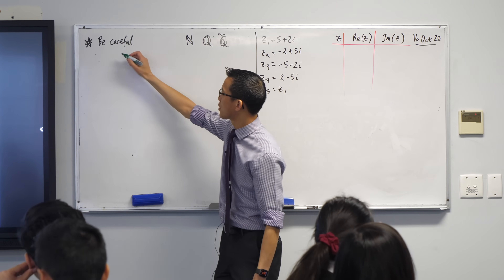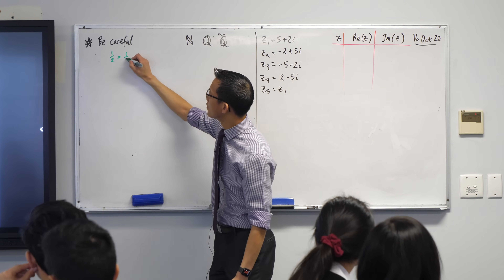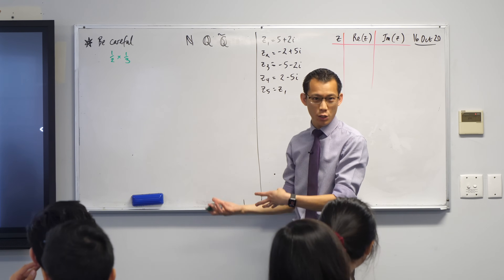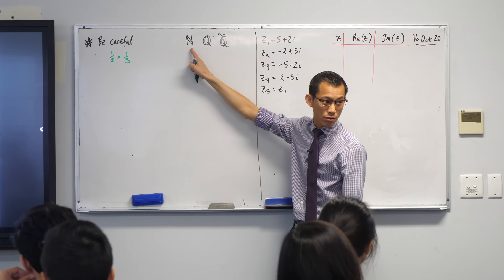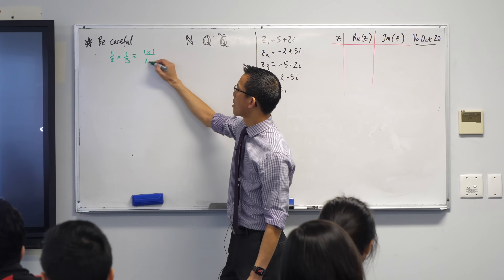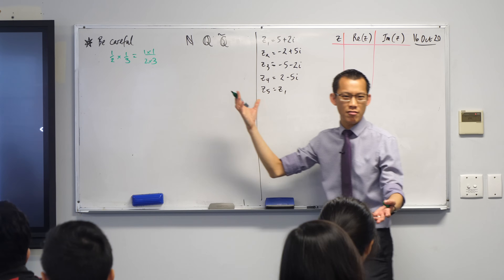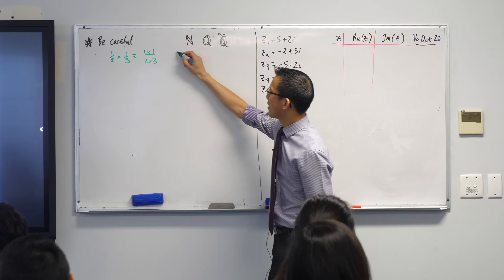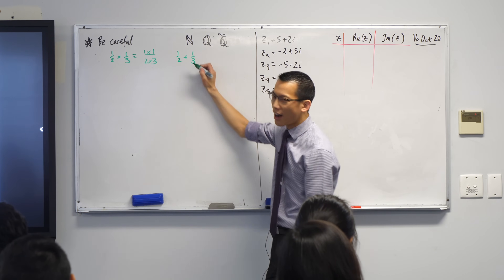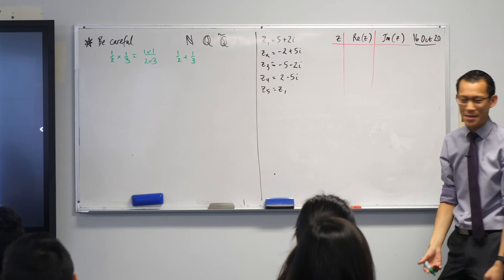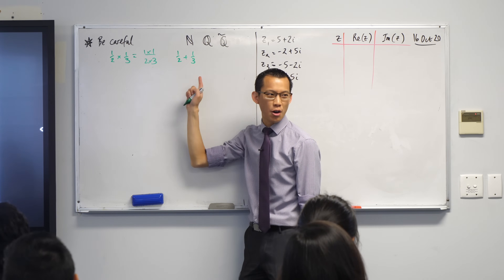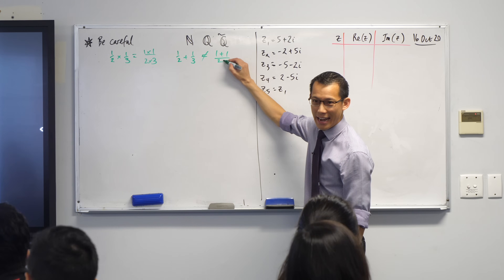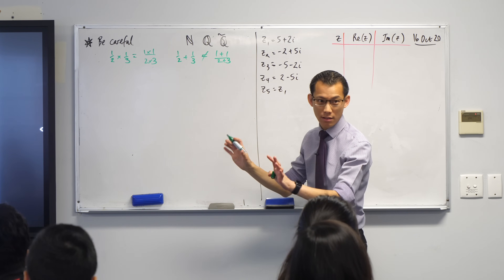We know that if you have something like a half times a third, this obeys the kinds of things you'd expect from multiplying whole numbers — you just multiply the tops and multiply the bottoms, everything's happy. But think back to year 5, 6, or 7 — we then said: watch out, because just multiplying numerators and denominators does not mean you can just add the numerators and add the denominators. These things aren't the same.